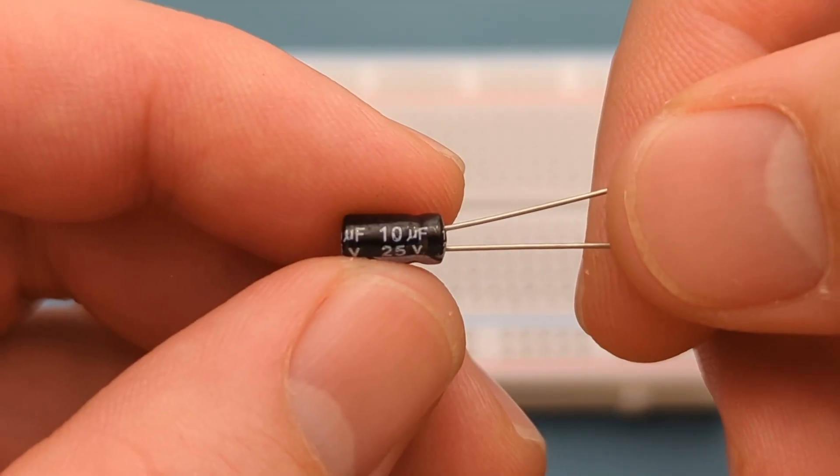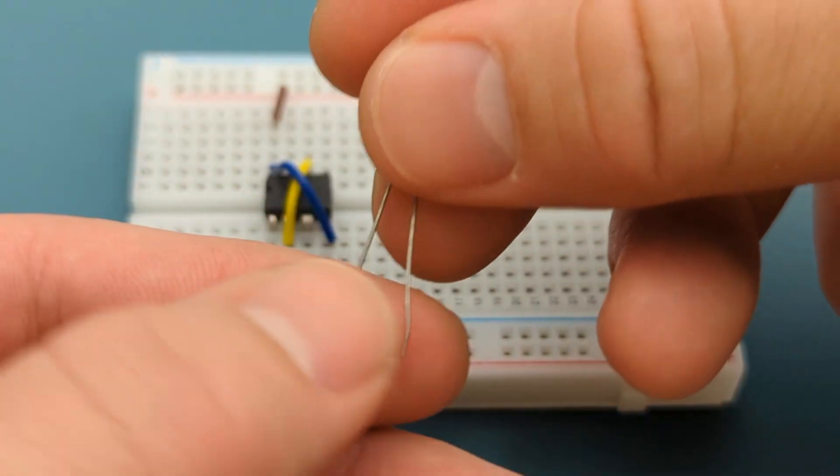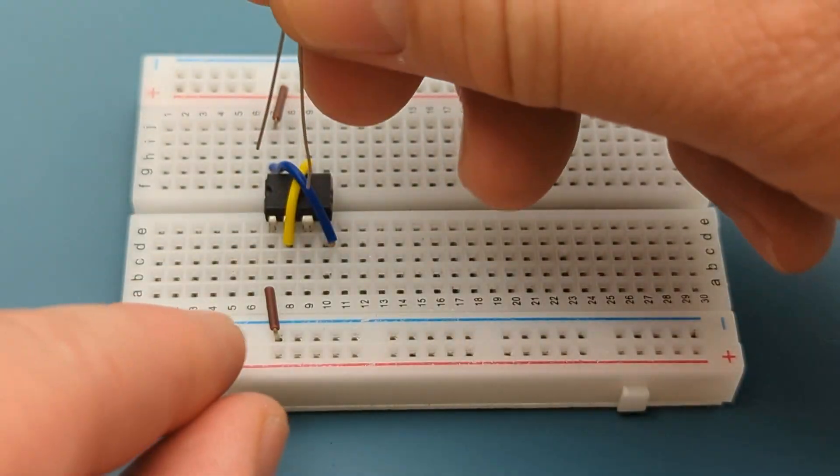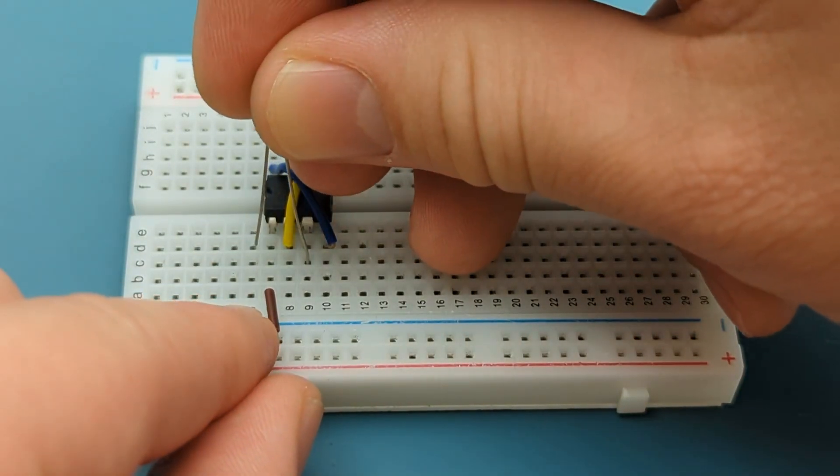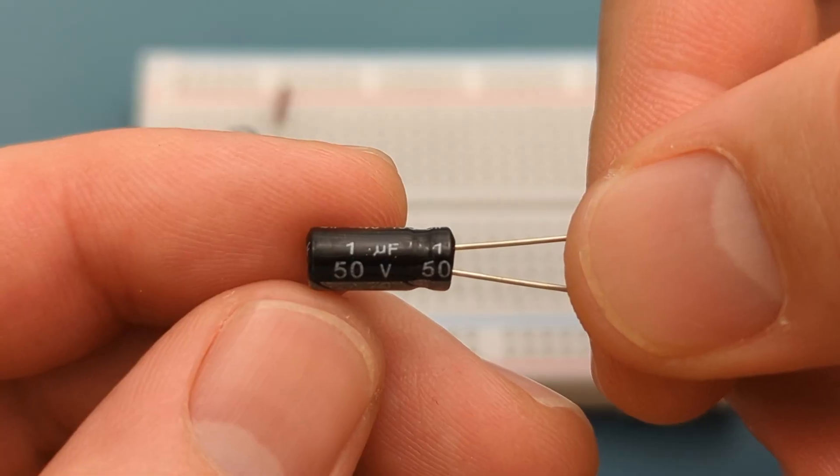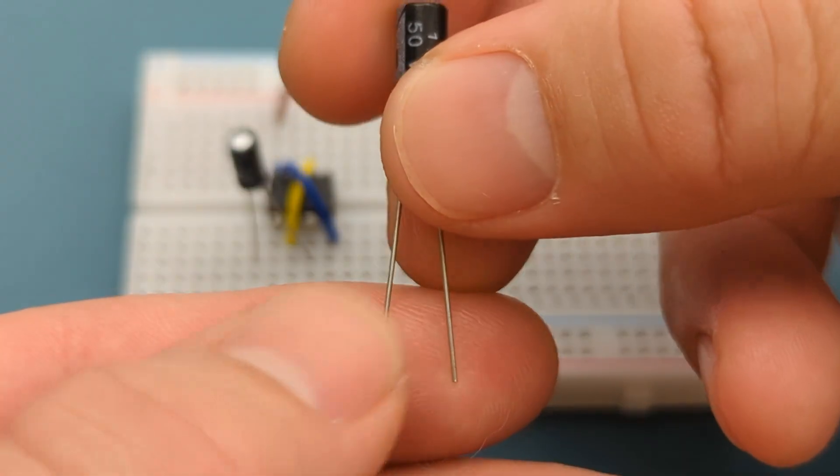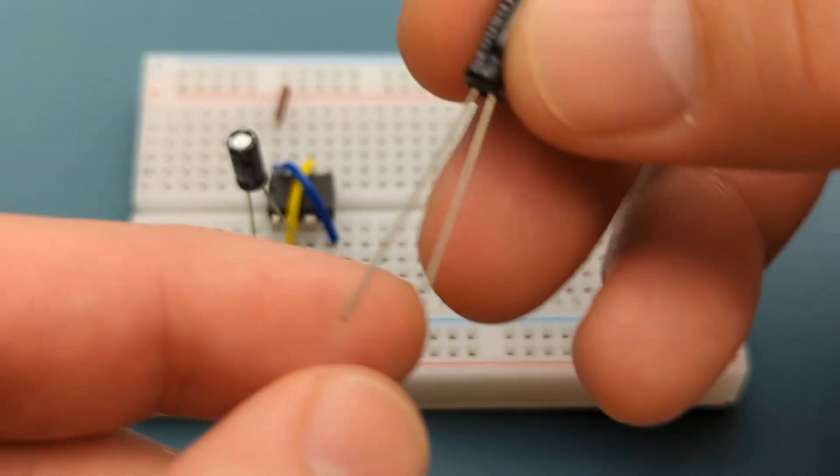Insert a 10uF capacitor into pin 3 or output in one row above the 555 timer. The positive lead is in pin 3. Insert a 1uF capacitor into pin 2 or trigger in the negative rail. The positive lead is in pin 2.